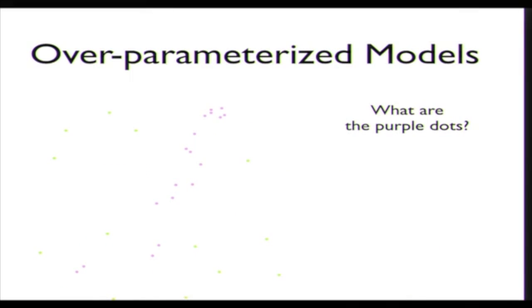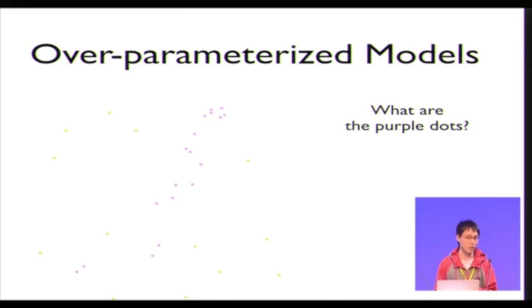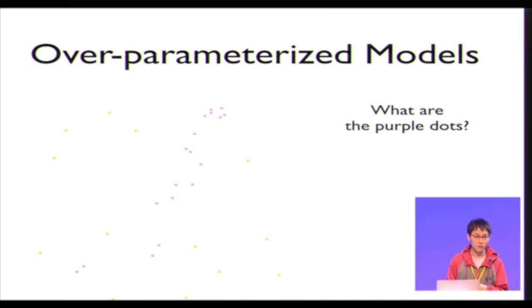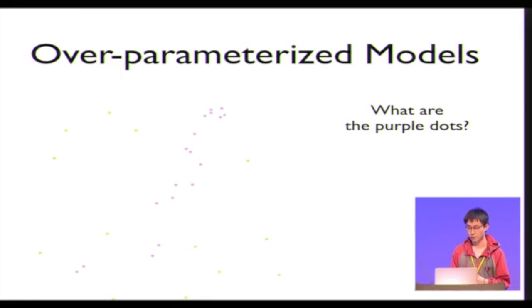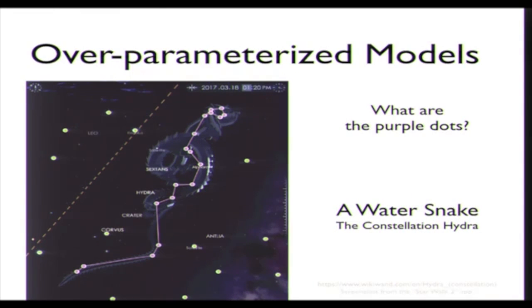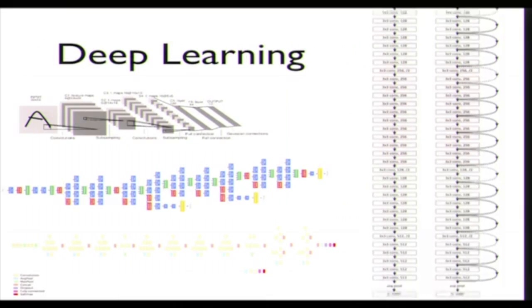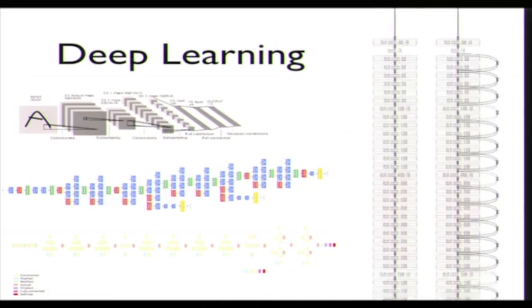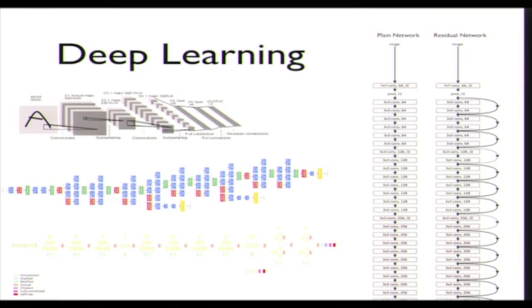However, there are some fields where overparameterized models are actually very popular and successful. For example, when trying to interpret the structures and patterns of the stars in the sky, people use a lot of imagination and creativity. They create beautiful pictures and structures out of just a few dots, and those dots are mixed with many other dots in the sky. Of course, the other regime where overparameterized models are used a lot is deep learning, as all of you are very familiar with.